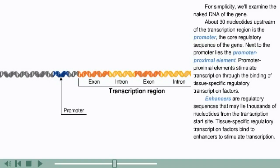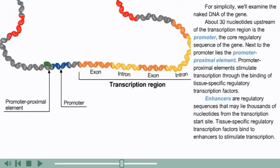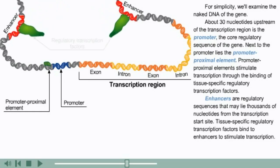Next to the promoter lies the promoter proximal element. Promoter proximal elements stimulate transcription through the binding of tissue-specific regulatory transcription factors. Enhancers are regulatory sequences that may lie thousands of nucleotides from the transcription start site. Tissue-specific regulatory transcription factors bind to enhancers to stimulate transcription.